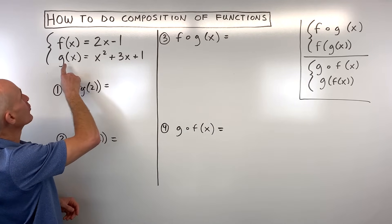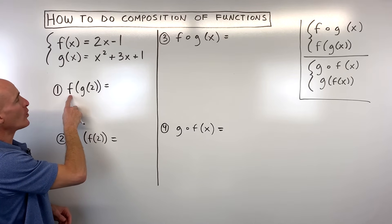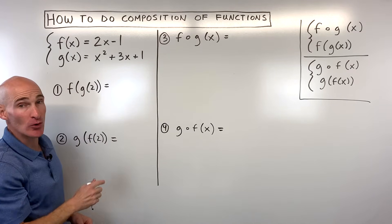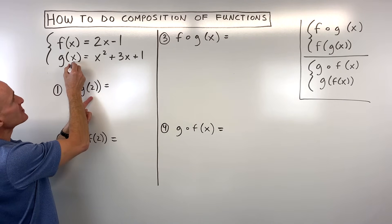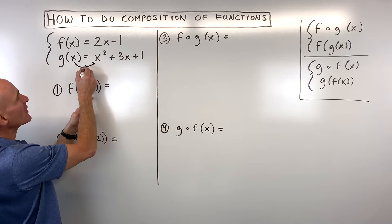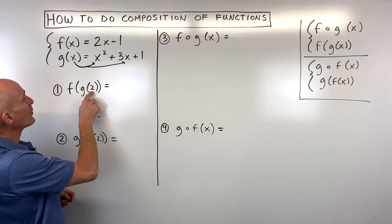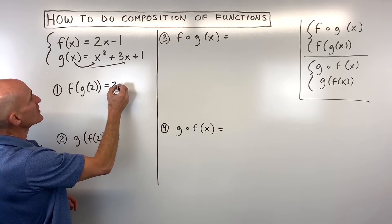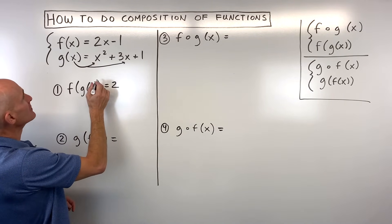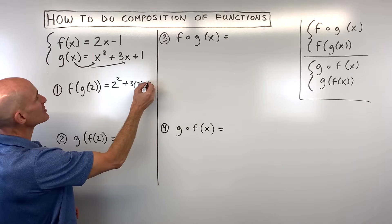So in this first example we're working with f of x and g of x these two functions and we're going to find out what is f of g of 2. Now what that means is we're going to go to our g function. Whatever's in parentheses that's going to go in for x on the right side of the equation. So whatever's in the parentheses that's like our new x value.